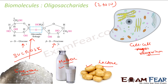Oligosaccharides have two to ten different monosaccharides joined by a glycosidic linkage. A glycosidic linkage joins two monosaccharides together. Oligosaccharides are found in milk, vegetables like potatoes, and in sugar — sucrose is the one in sugar, maltose is the one in milk, and lactose is in vegetables.